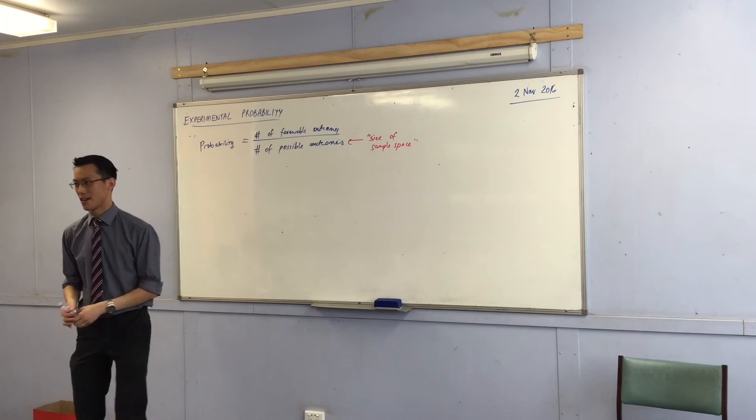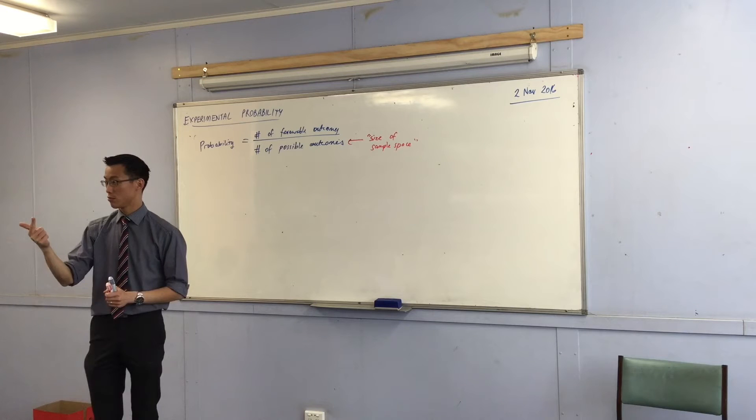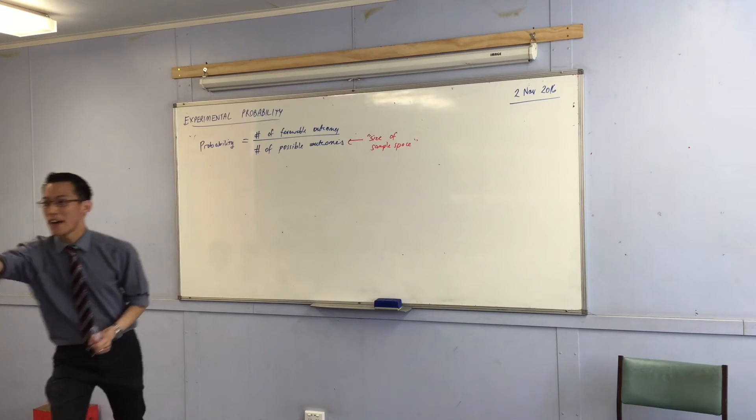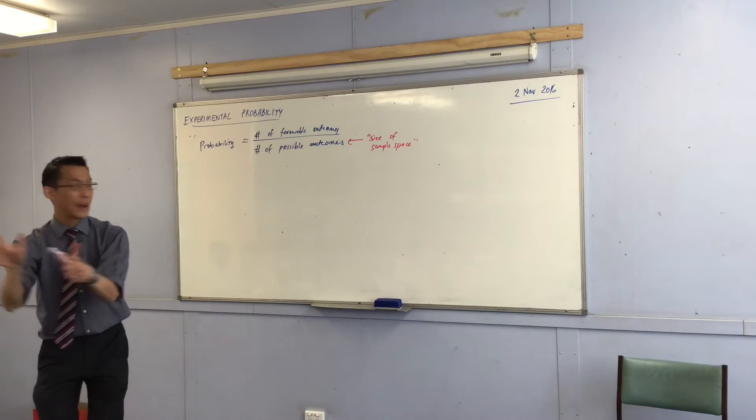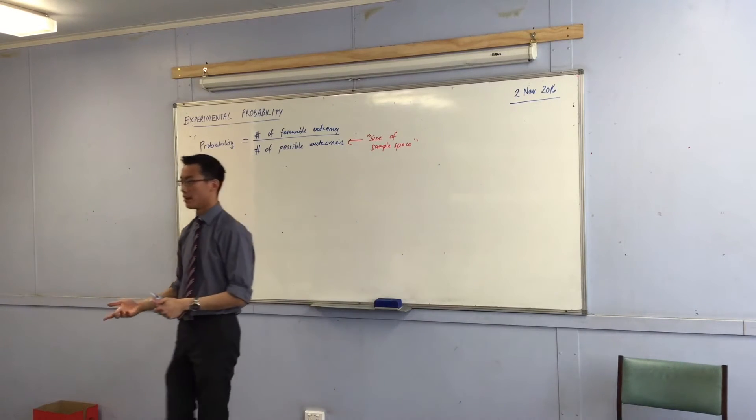On a die, what is the sample space on a die? One, two, six. On a die? Oh, I thought it was die. One, two, three, four, five, six, right? That's the sample space. So the size of the sample space is how many things are there? It's six.